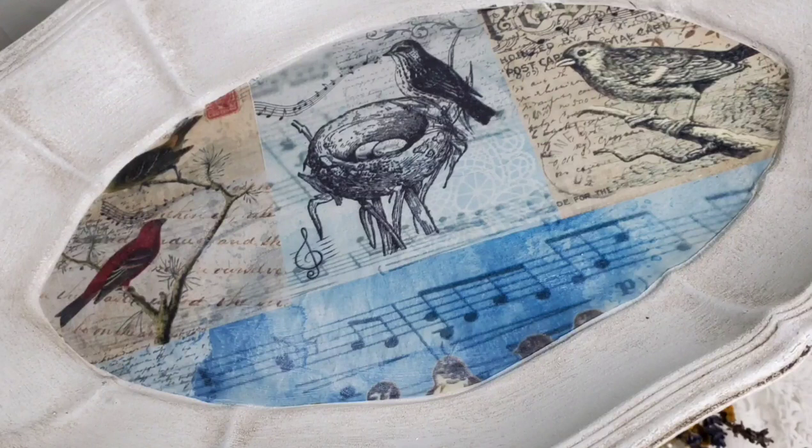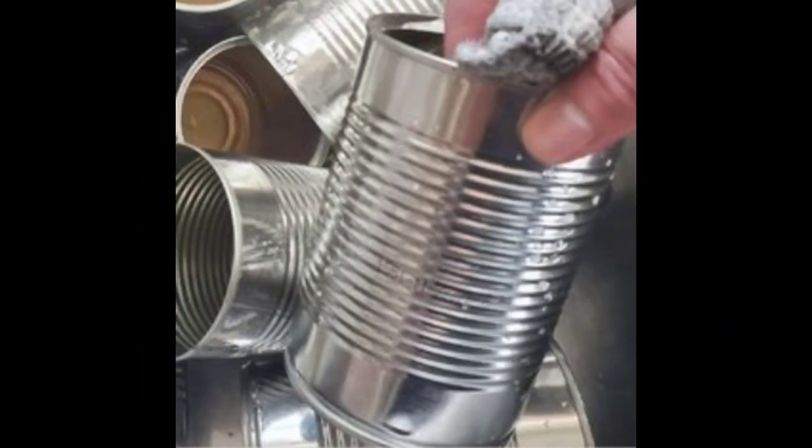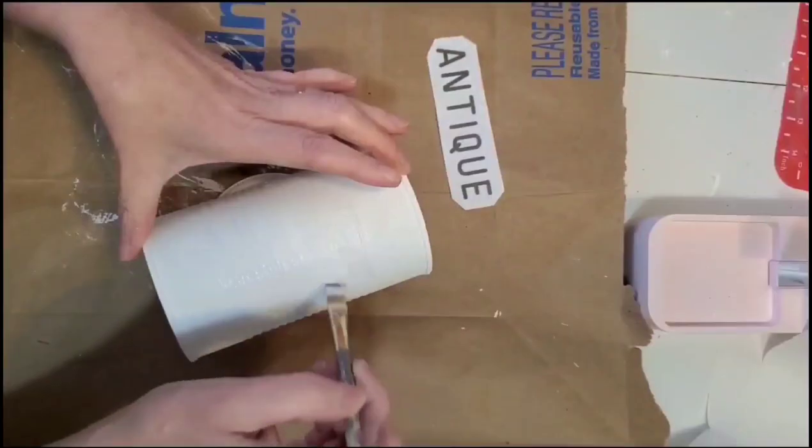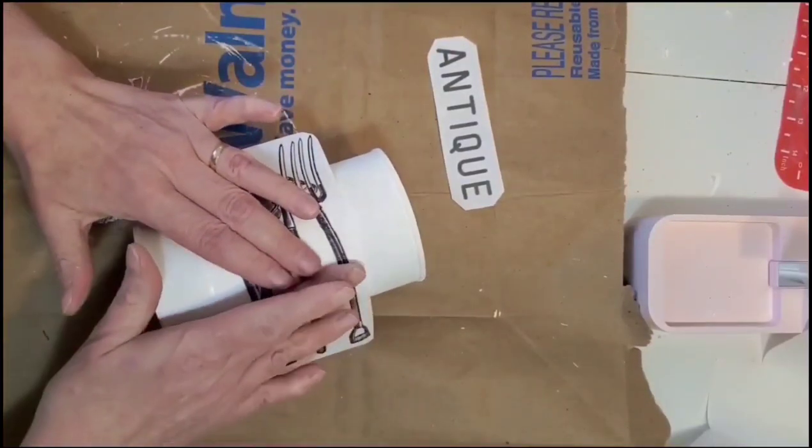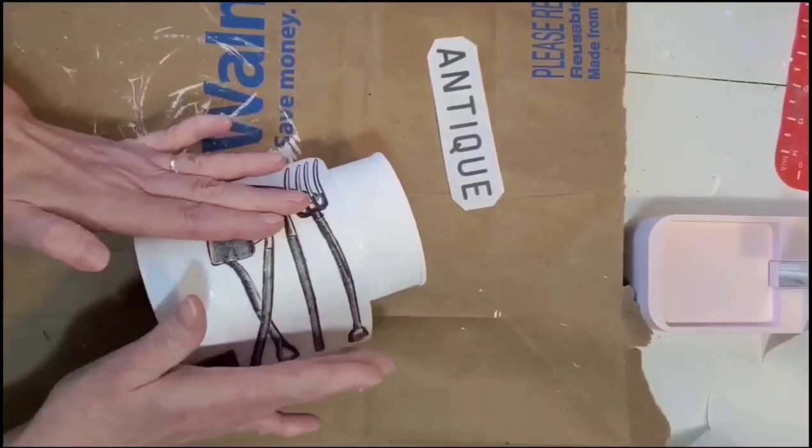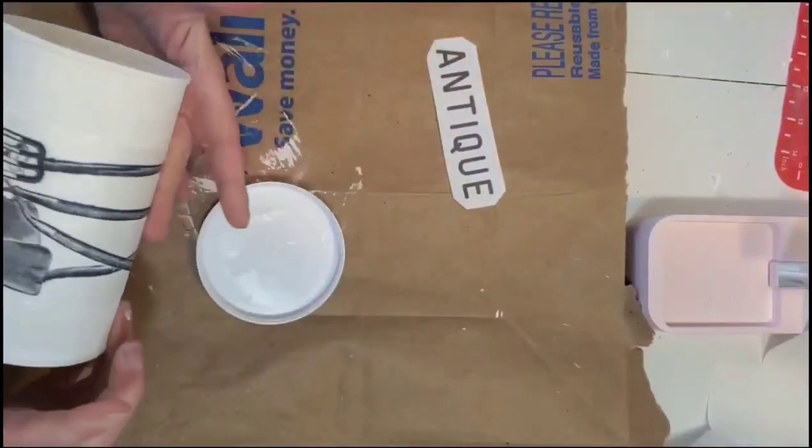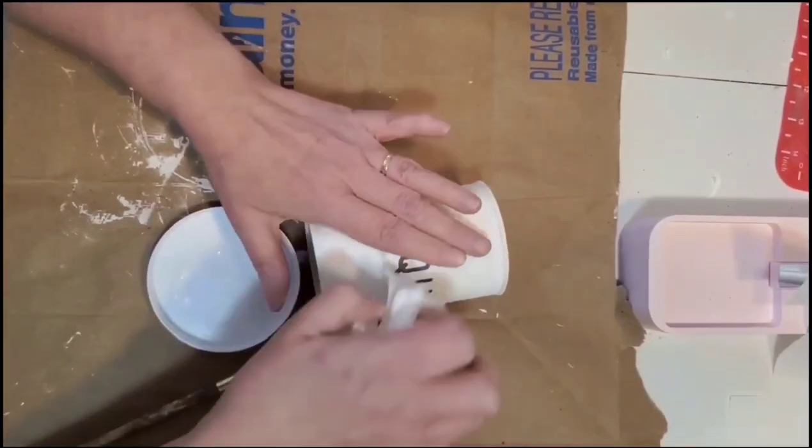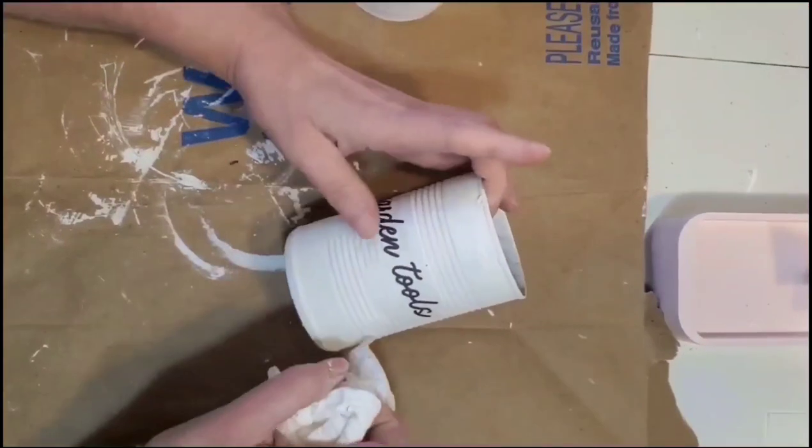Two regular size soup cans and a larger one. I covered these cans with one coat of gesso and one coat of chalk paint. I'm gluing on the images with a thin coat of Mod Podge. The garden tool image I got from the Graphics Fairy. The words I just typed on Canva and printed them out.